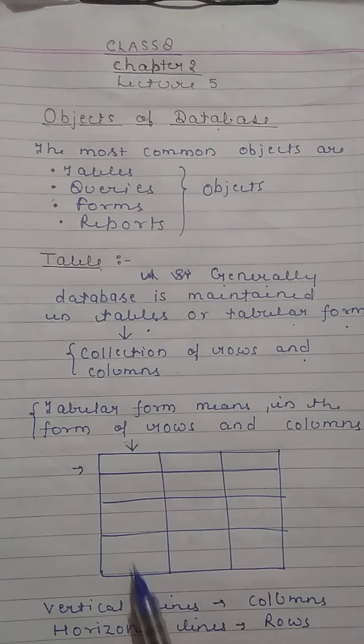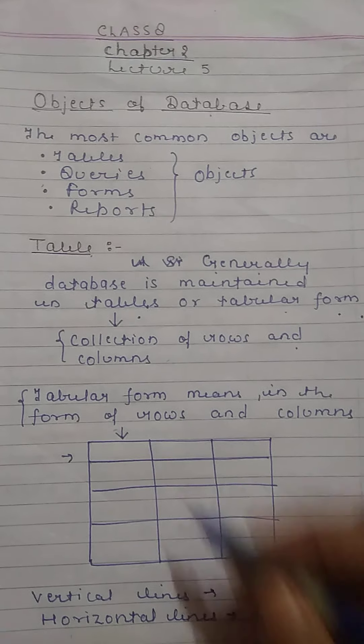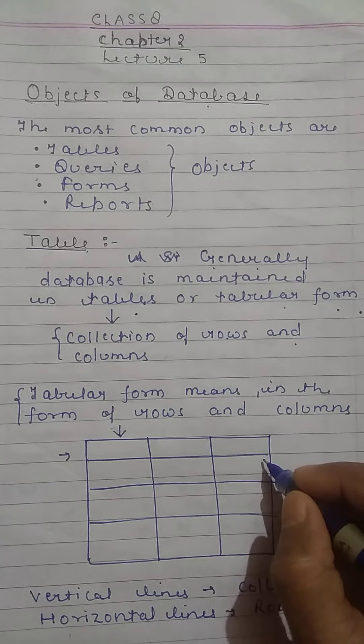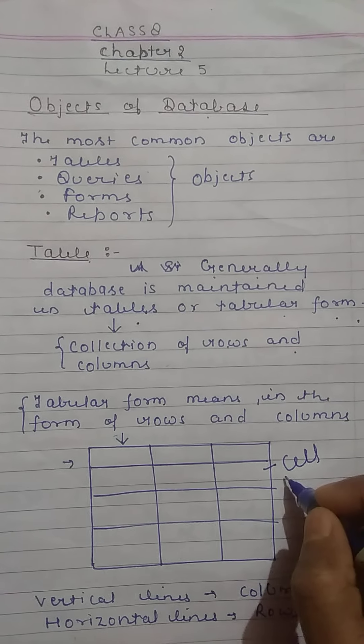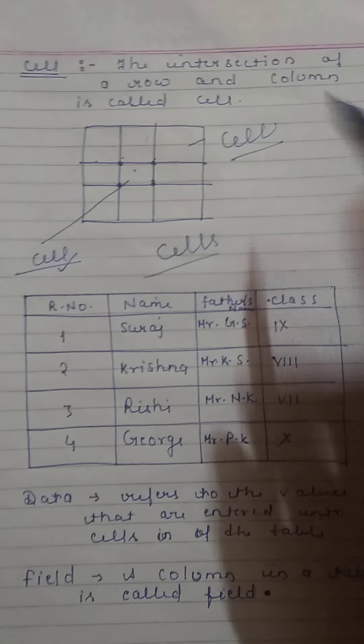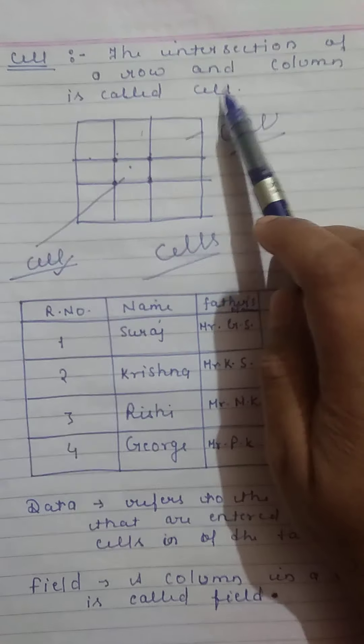Vertical lines are called columns and horizontal lines are called rows. The intersection of a row and column is called cell. It means each rectangular box is called cell.